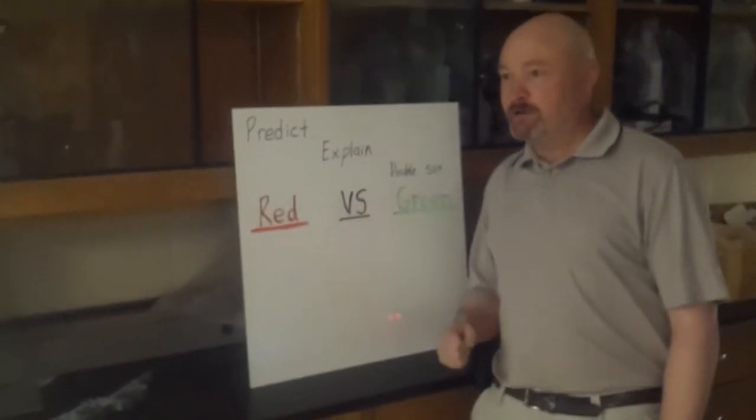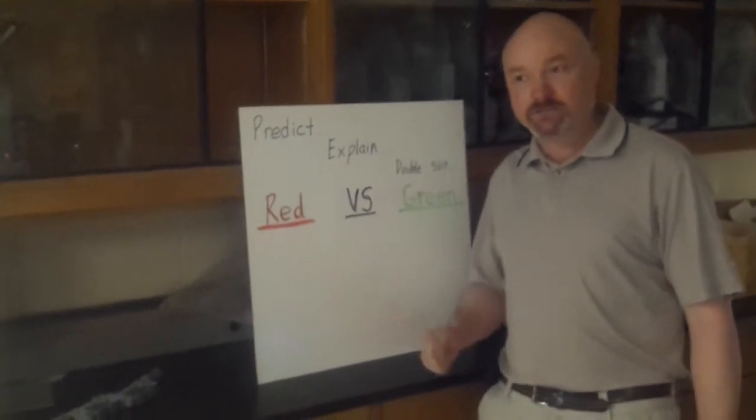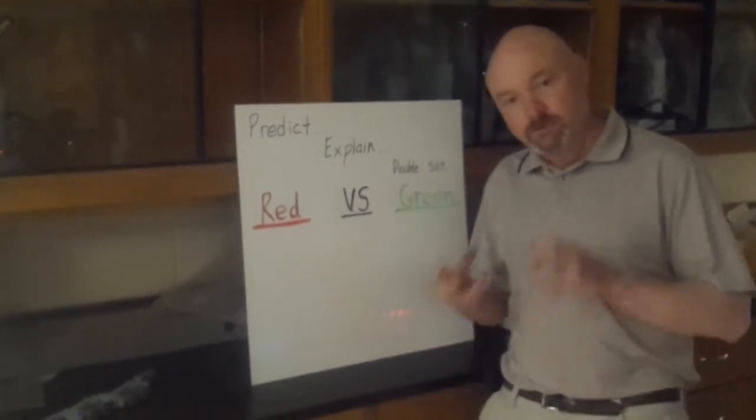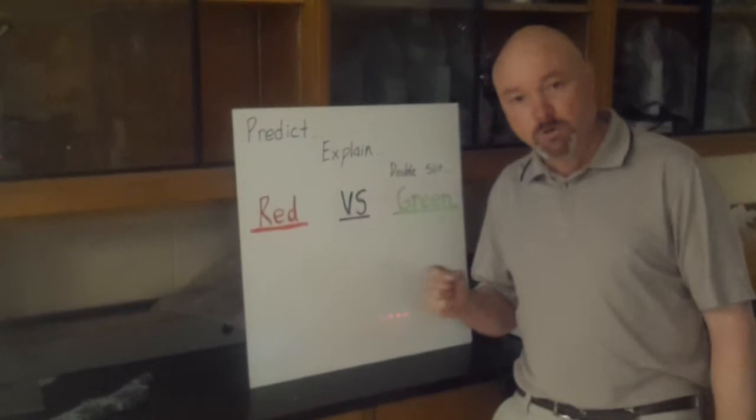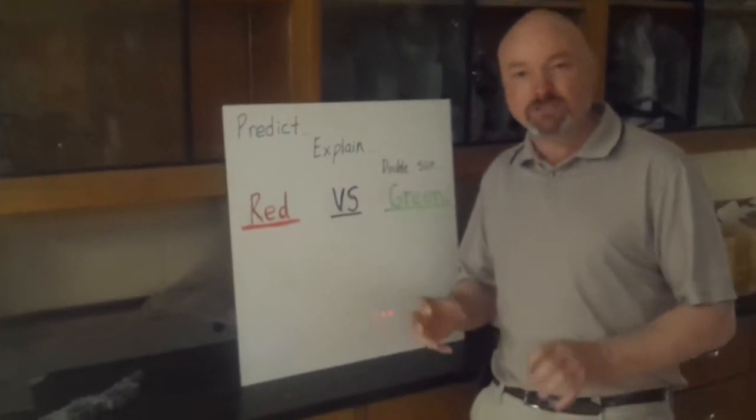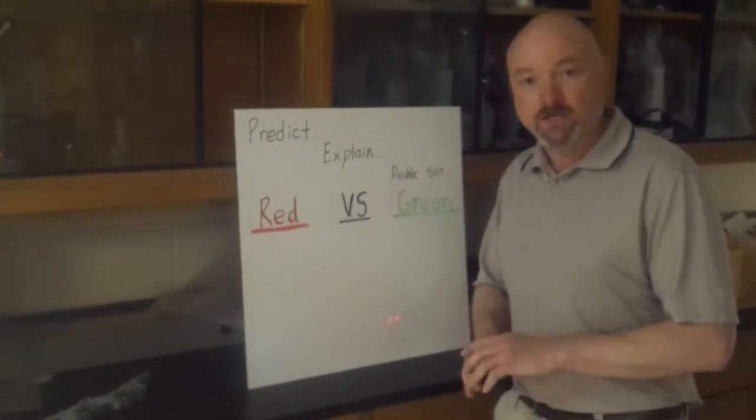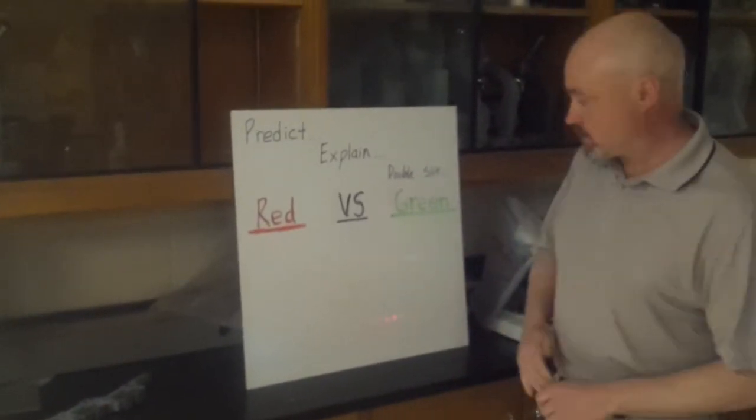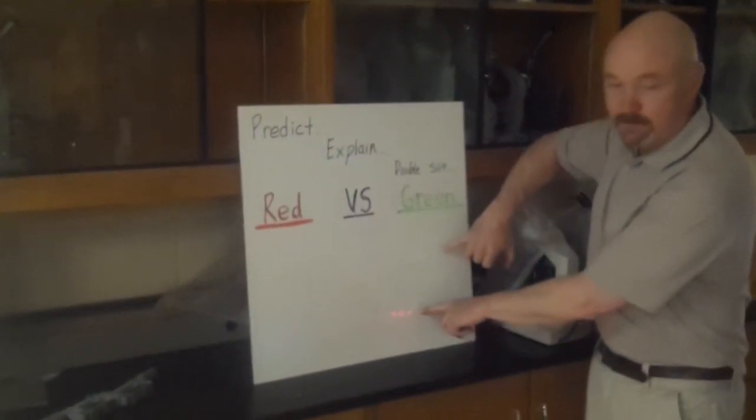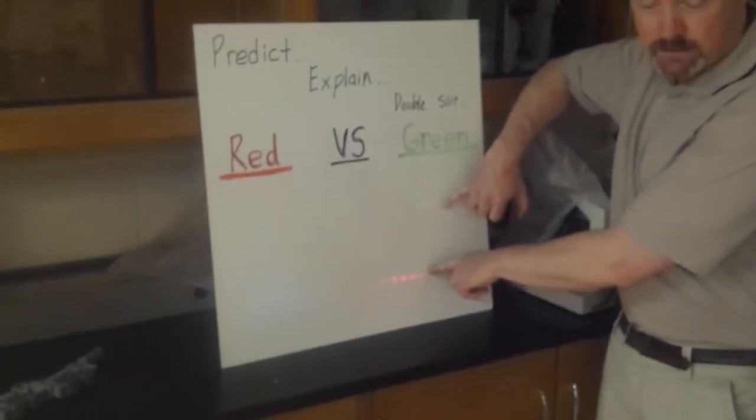We're going to be doing a prediction and an explanation surrounding Young's double slit experiment. This experiment is very important in its ability to demonstrate or illustrate that light behaves much like a wave. You're going to be making a prediction based around red light and green light in Young's double slit experiment.